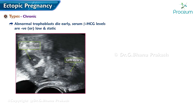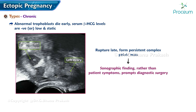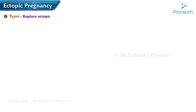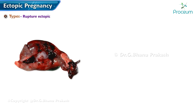Chronic: with a chronic ectopic pregnancy, abnormal trophoblasts die early, and thus serum beta-hCG levels are negative or low and static. Chronic ectopic pregnancies typically rupture late if at all, but commonly form a persistent complex pelvic mass. This sonographic finding, rather than patient symptoms, often prompts diagnostic surgery.